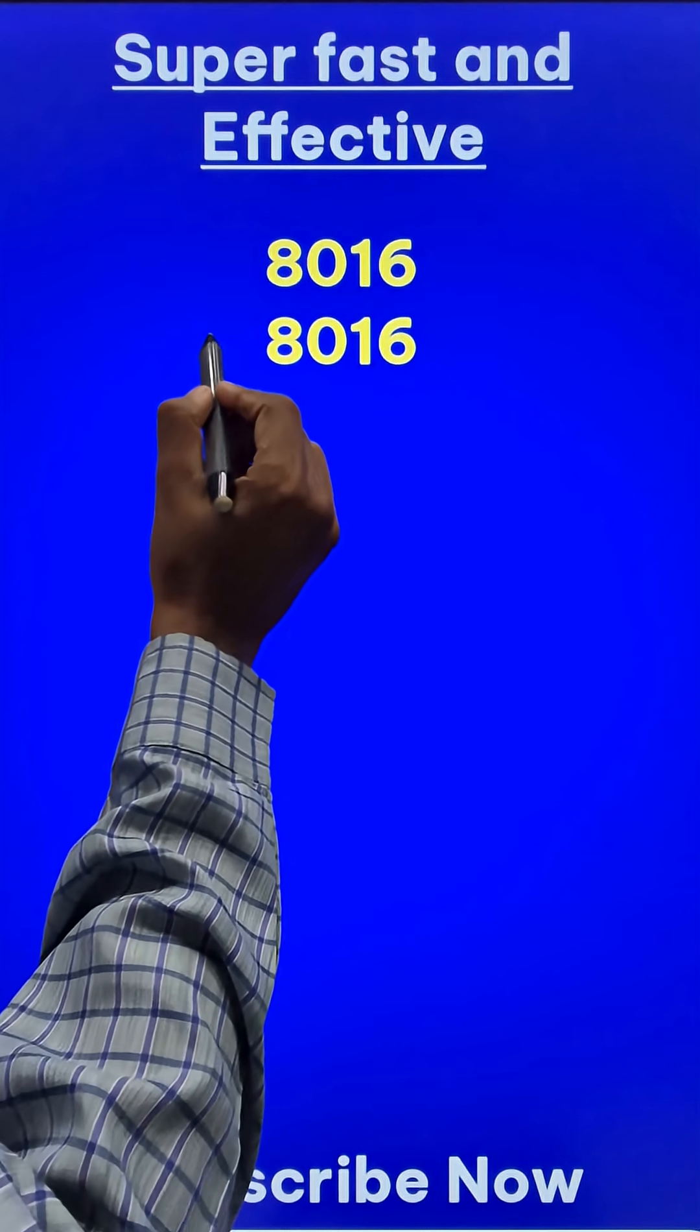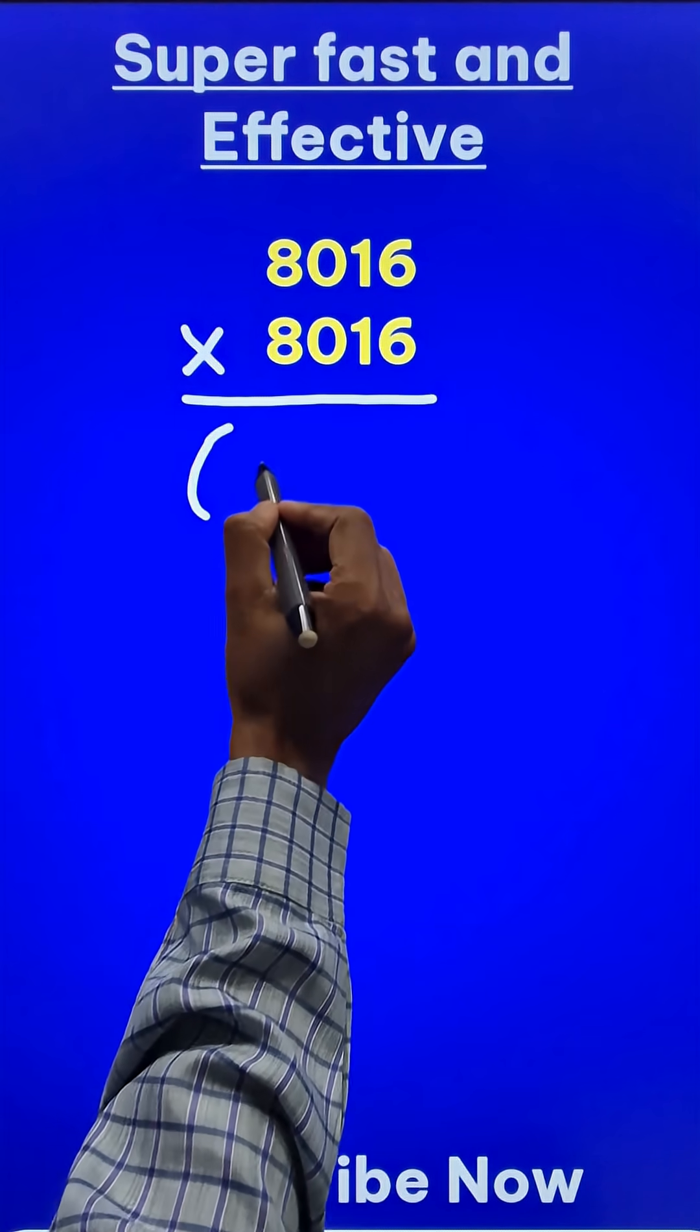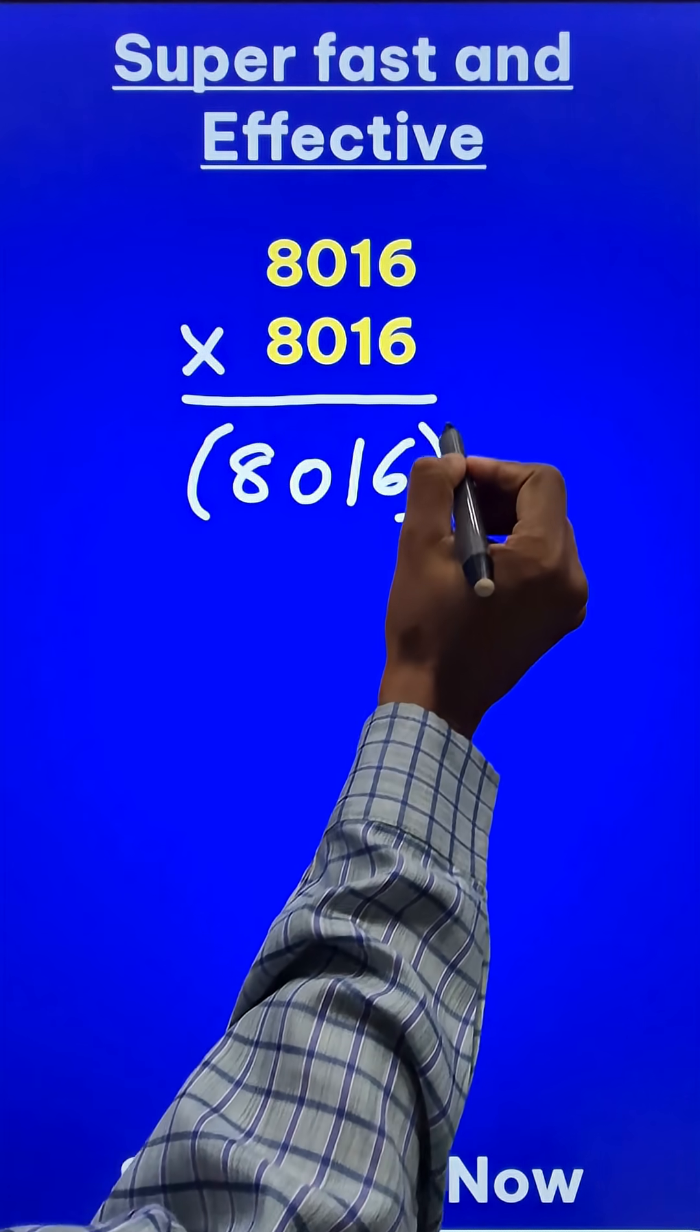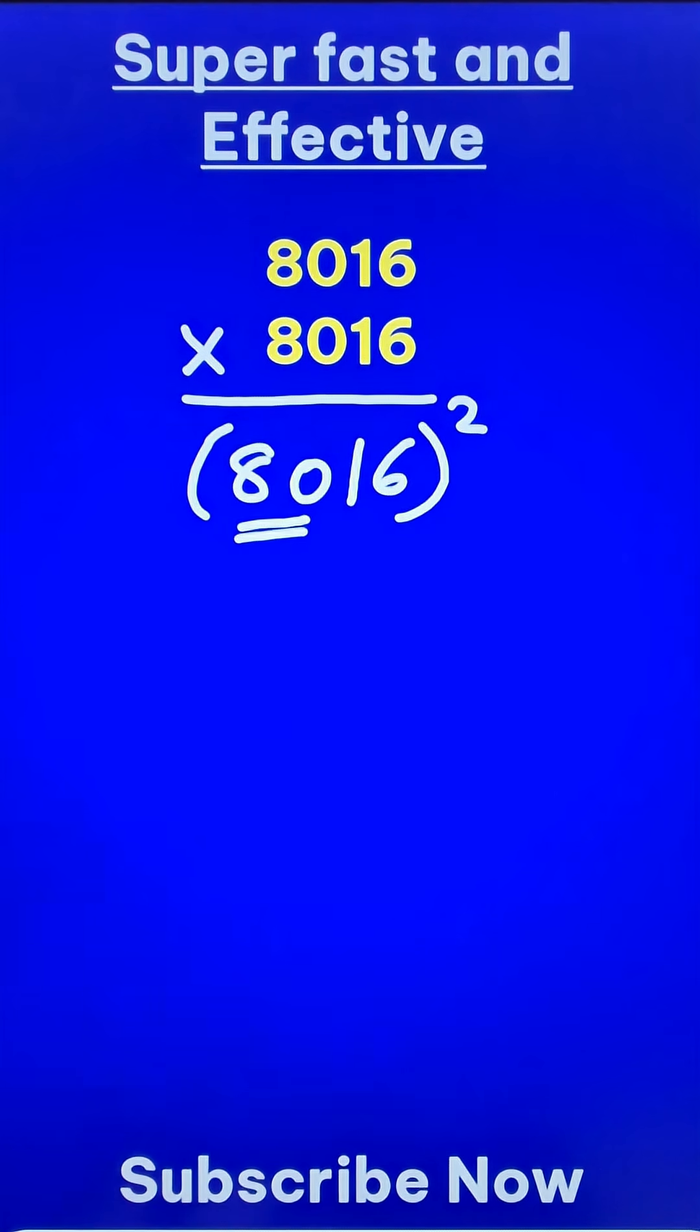Let's try to multiply 8016 by 8016, or just square 8016. Let's try and do it in minimum number of steps. Let's consider 80 as one number and 16 as the other number. So can we apply a plus b whole square?